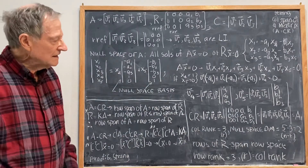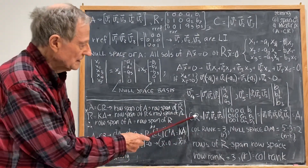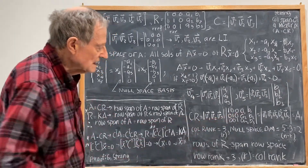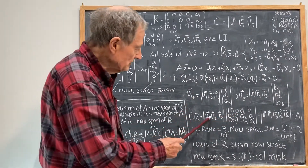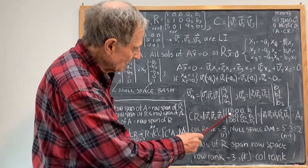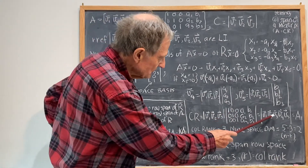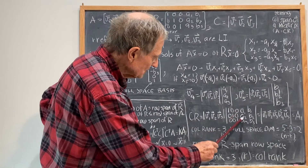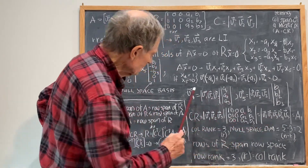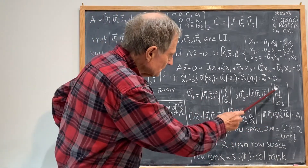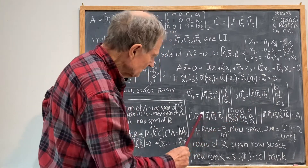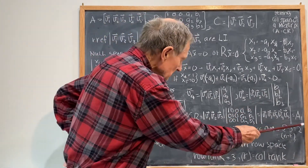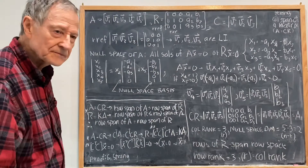Finally, if I multiply C times R, I get V1, V2, V3 times the matrix R. The result is: the identity block gives me back V1, V2, V3; then V1, V2, V3 times (A1, A2, A3) gives me V4; and V1, V2, V3 times the last column gives me V5. So C times R equals A — confirming the factorization.